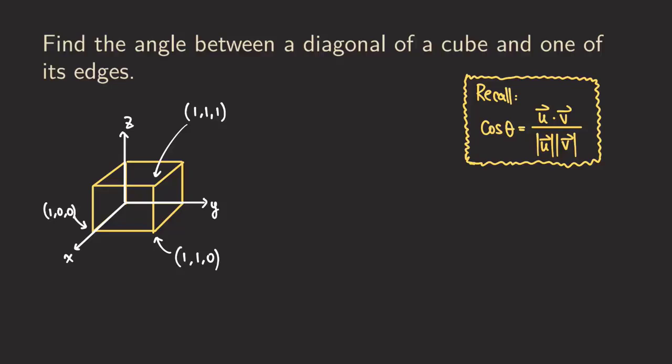So now what happens is that we want to draw the diagonal. So how do we draw this diagonal right here? So the diagonal is actually starting from this corner to this corner right here, which is the origin to this point, one, one, one. So we have this vector right here.